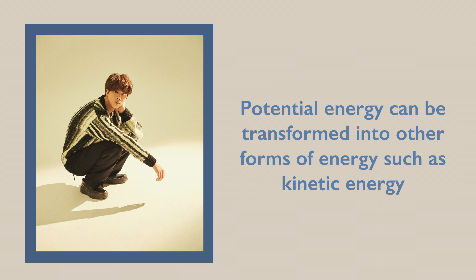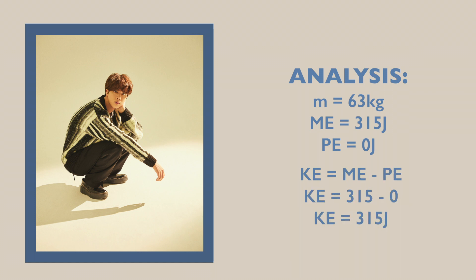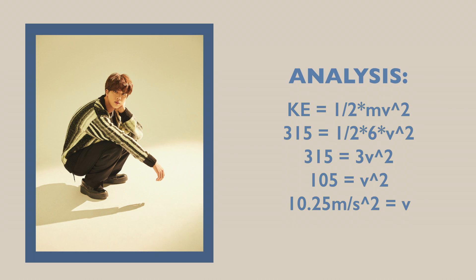Potential energy can be transformed into other forms of energy, such as kinetic energy. In this image, Jin has moved to the ground. The things that we know are: mass is 63 kilograms, mechanical energy is 315 joules, and potential energy is 0 joules. First, we need to figure out what the kinetic energy is: 315 minus 0 is 315. Then to calculate the velocity, we use the formula for kinetic energy, which results in 105 equals V squared. To get V, you need to take the square root of 105, which results to 10.25 meters per second.